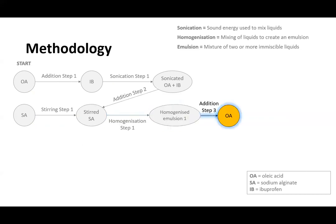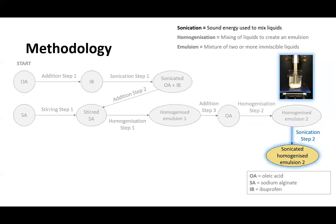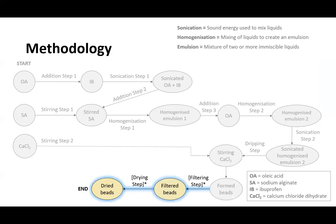This is then homogenized, creating the first emulsion. This emulsion is added to excess of oleic acid, which is then homogenized again to create the double emulsion. This is followed by a sonication step, which is then dripped into stirred calcium chloride solution to form beads. The beads are then filtered and dried.